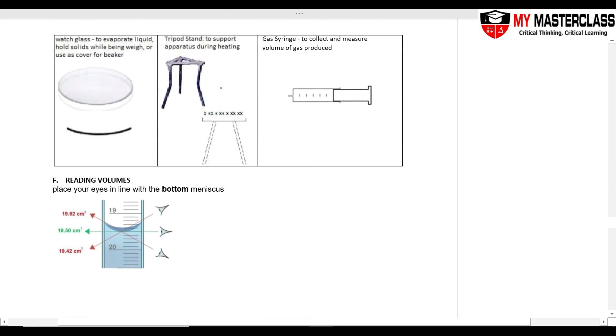I have a watch glass or evaporating dish. Usually the drawing is like this. This one is for you to hold solids that's being weighed or to evaporate a liquid. And then this is your tripod stand. Usually my Bunsen burner, I will put it here. And then on the top, I have to put in the wire gauze. So this is my wire gauze.